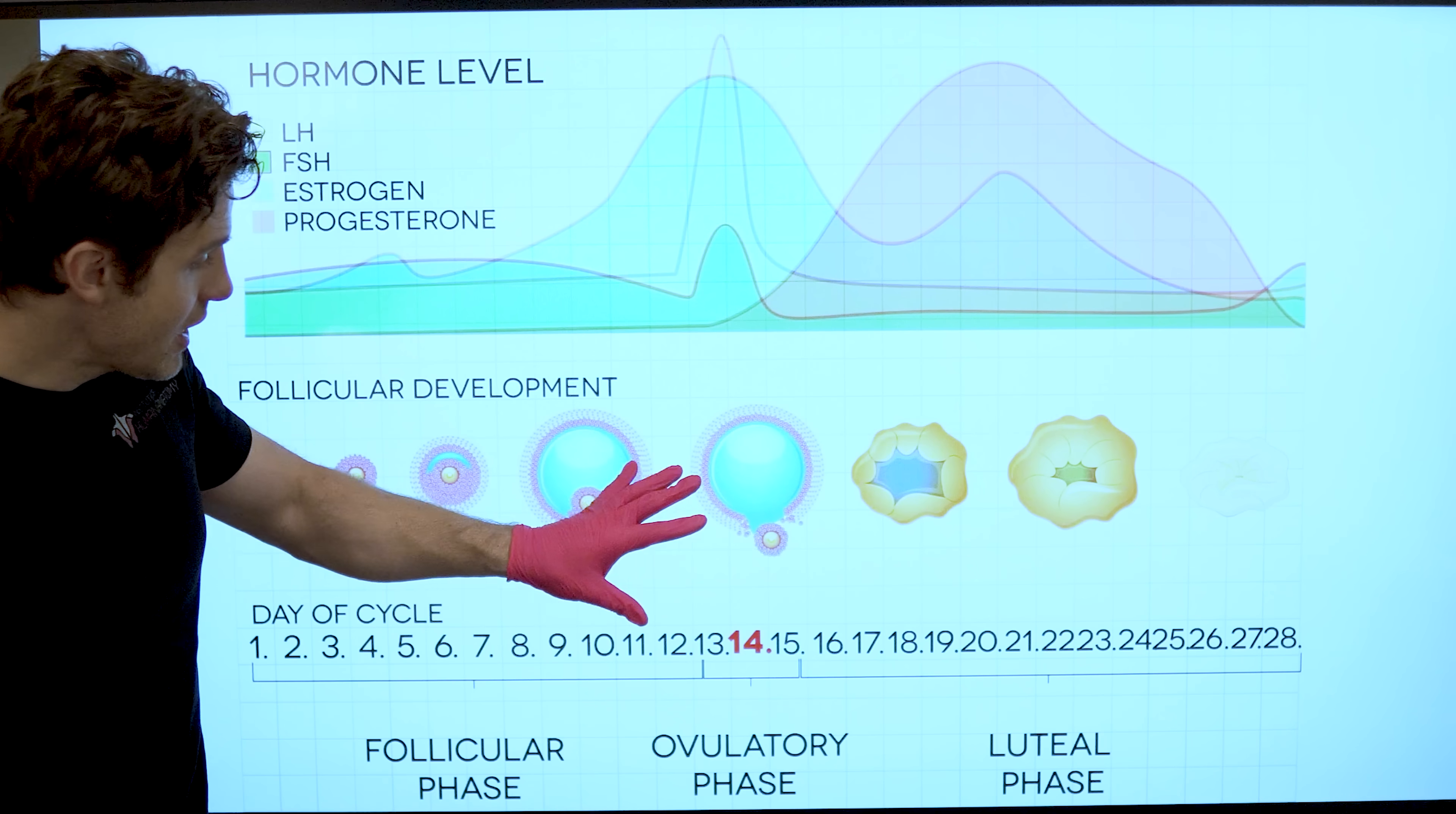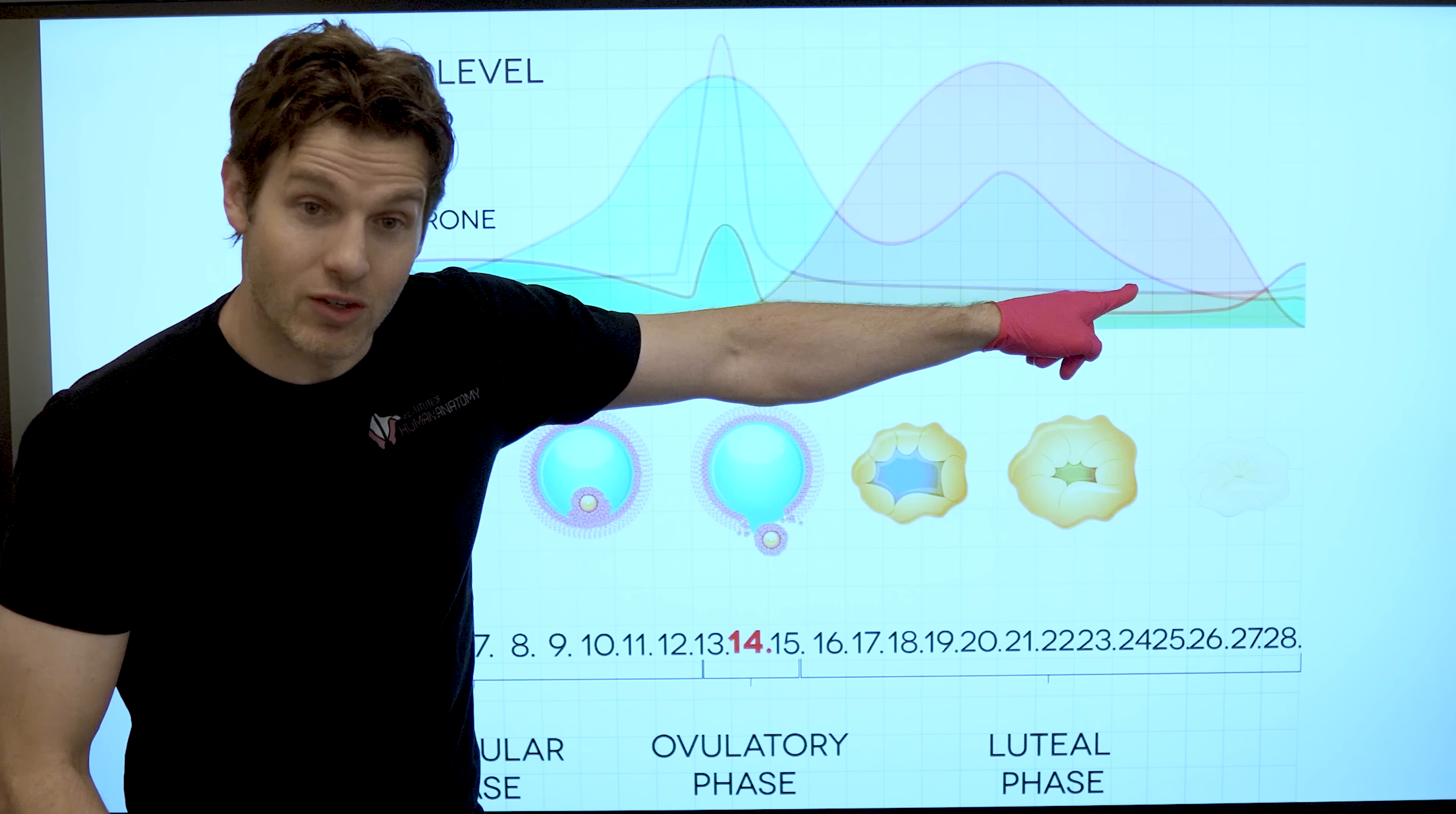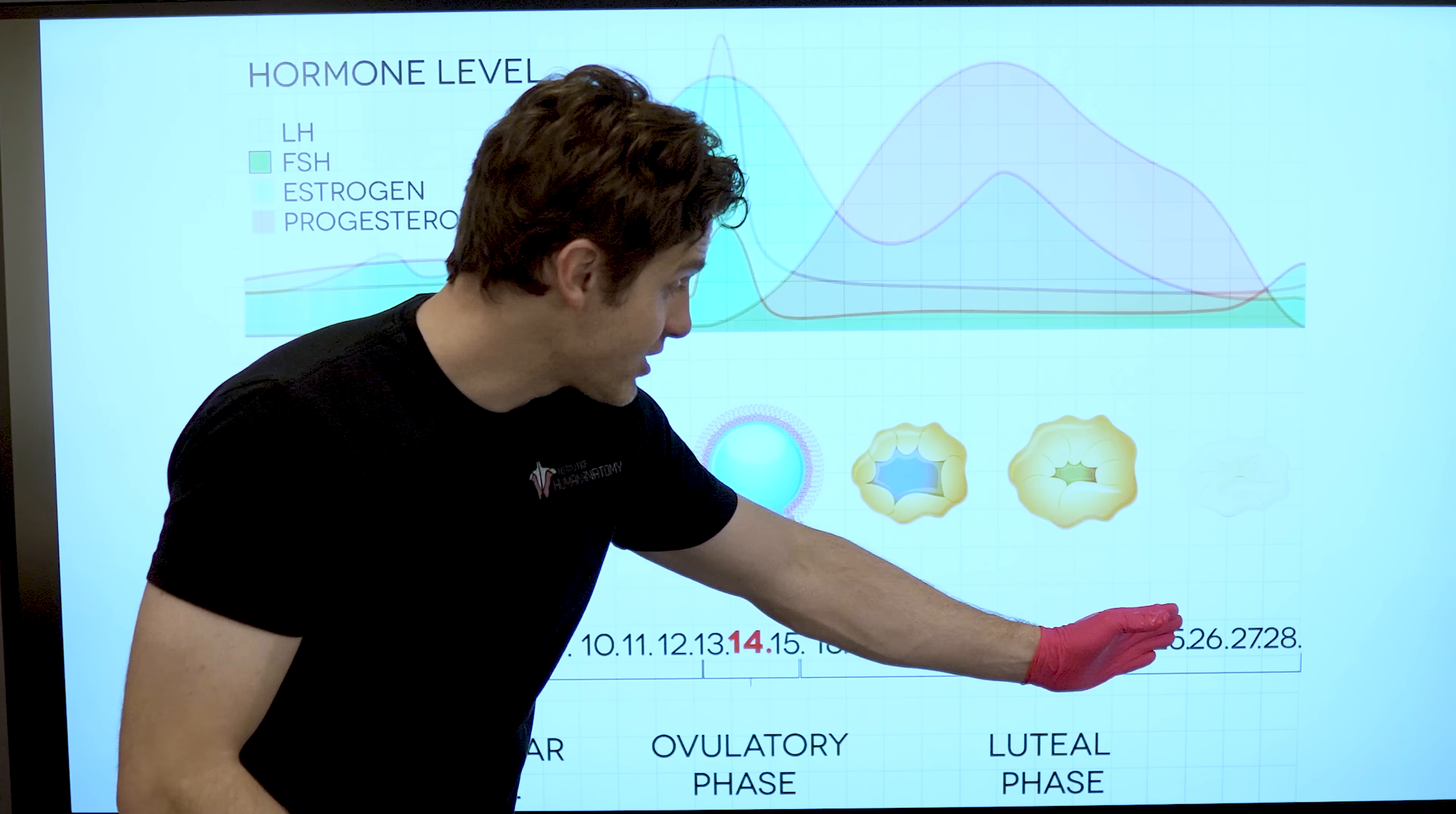After the follicle releases the egg, it becomes what we call the corpus luteum. Corpus luteum means yellow body. This is really important because the corpus luteum will actually secrete the progesterone and you see an increase in estrogen. That's this whole idea of potentially getting ready for pregnancy. And what happens if a female does not become pregnant, the progesterone and the estrogen levels tank down, they drop. The reason for that is the corpus luteum typically only has a life of about two weeks. So it lasts about two weeks and then degrades.